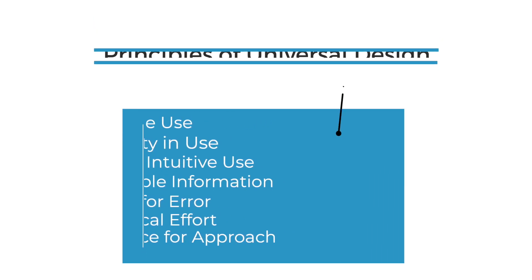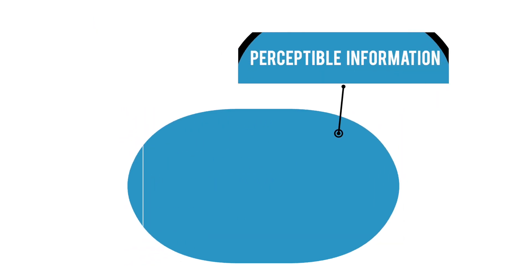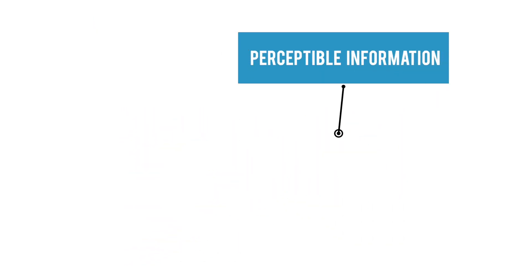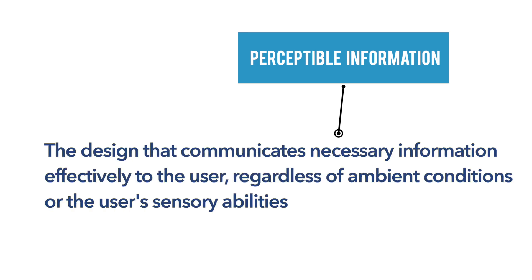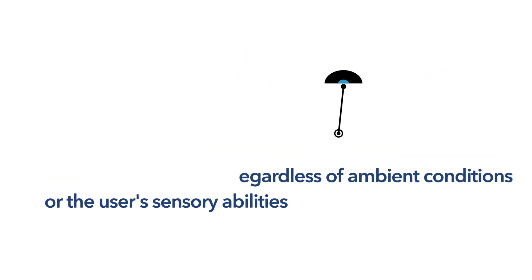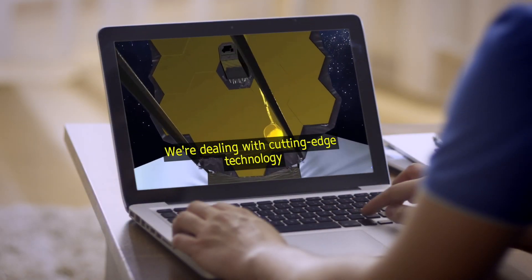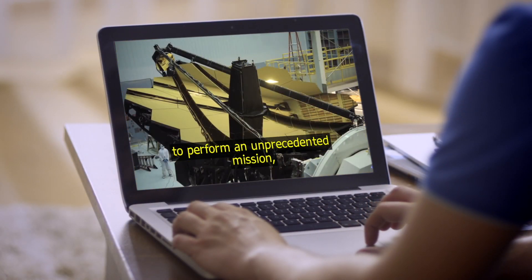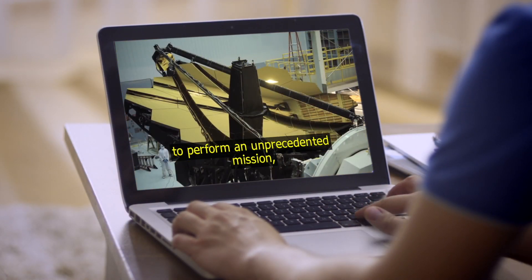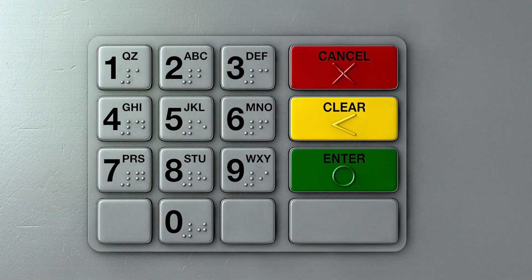The fourth universal design principle is perceptible information. Perceptible information is a design that communicates necessary information effectively to the user, regardless of ambient conditions or the user's sensory abilities. This means that the design will be effective for users who have different abilities to see, hear, communicate, and understand information.